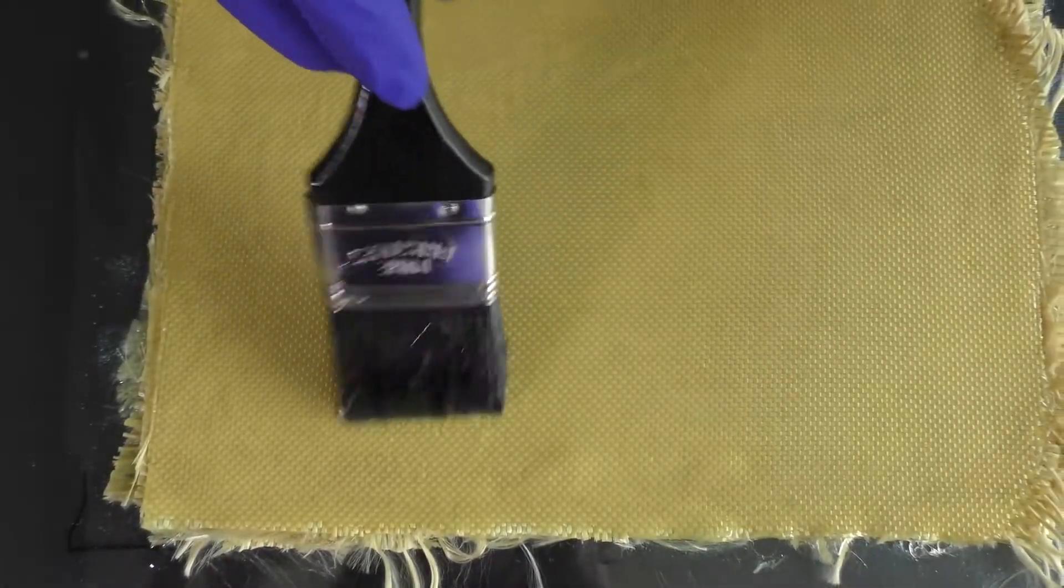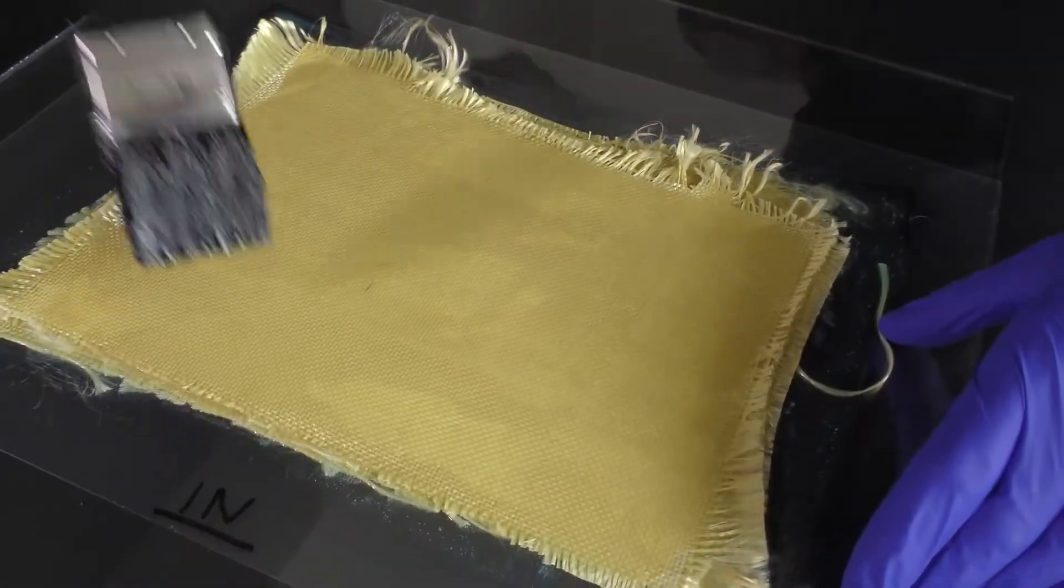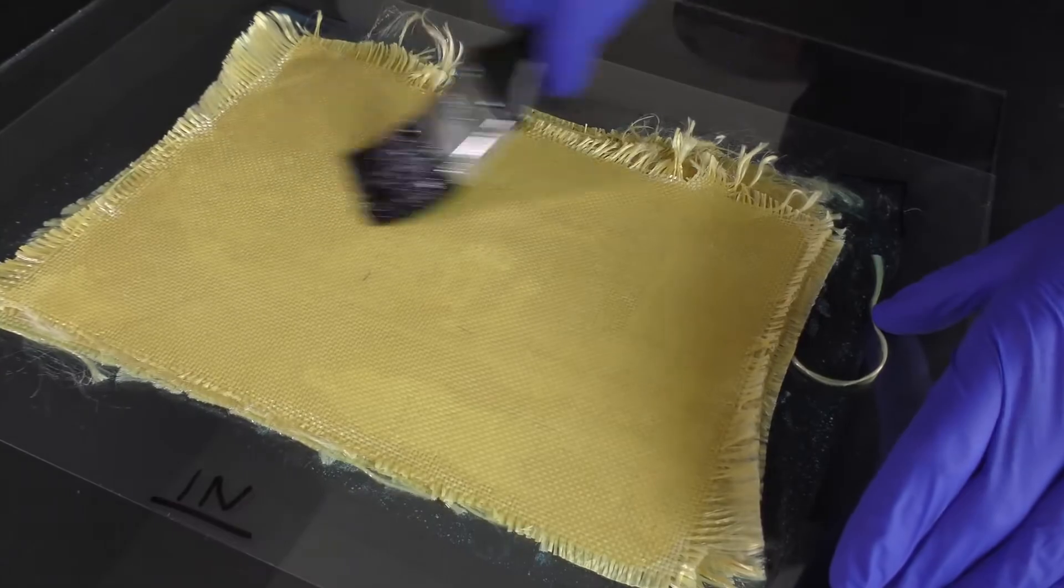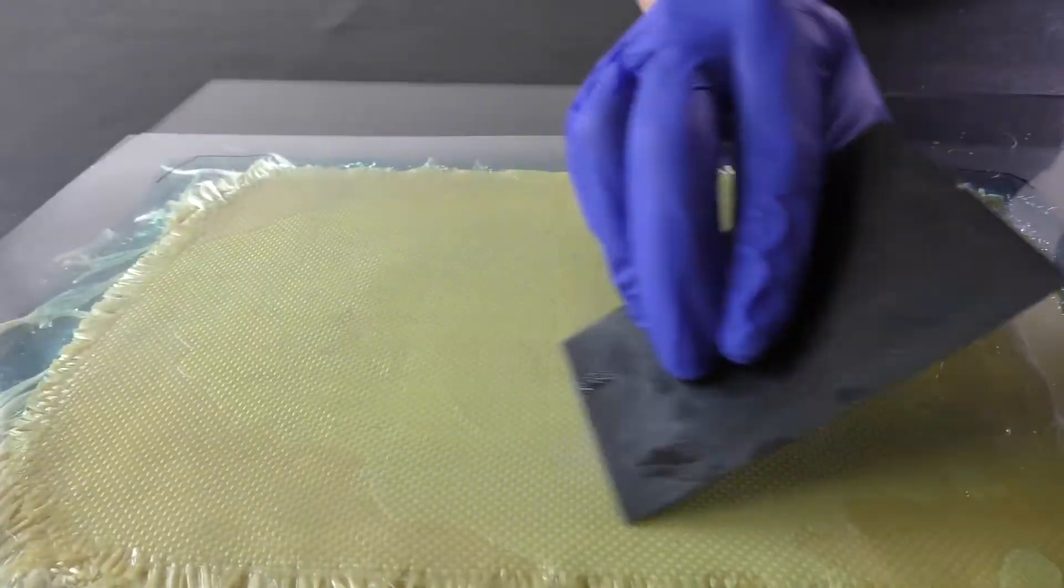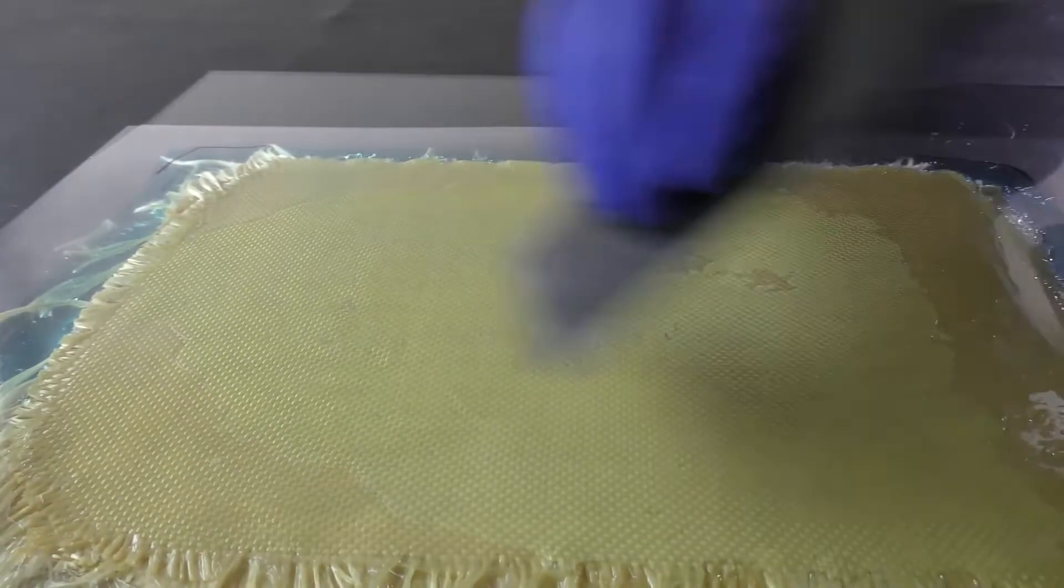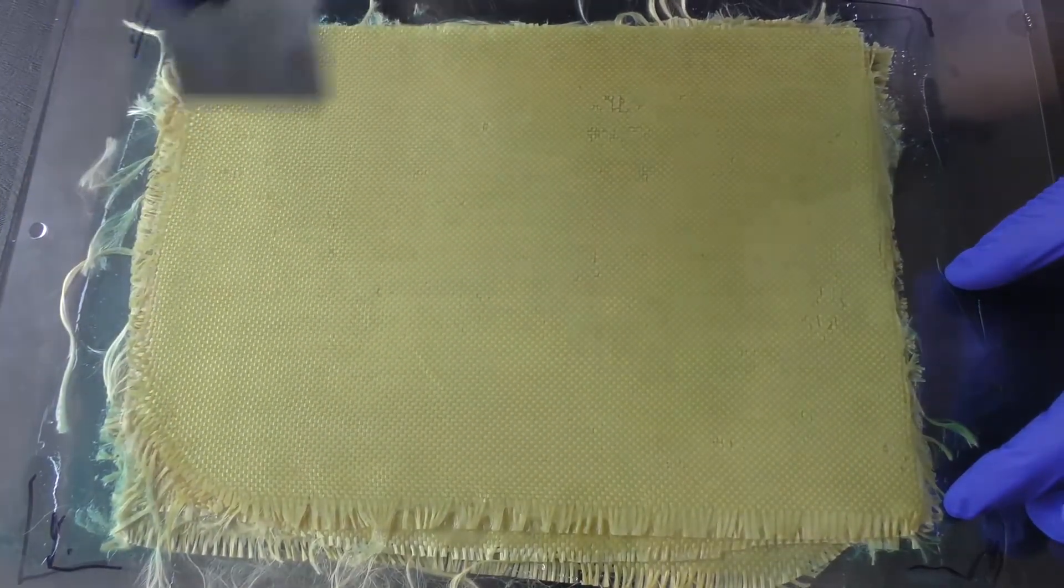Finally we're on the top layer and just like the bottom we're going to need no pin holes or bubbles so I'm going to use slightly too much resin. Last of all on goes the top cellophane with the release agent side in. All that's left to do now is squeegee out as much excess resin as possible and any air bubbles along with it.